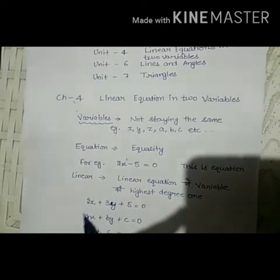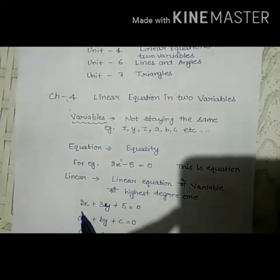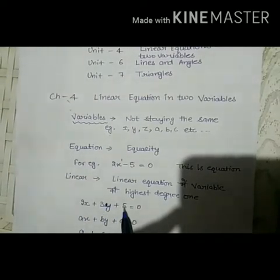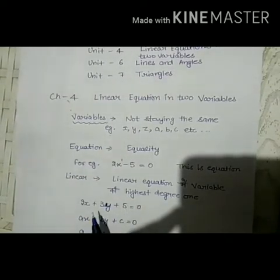Now I have a second example: 2x plus 3y plus 5 is equal to 0. Here, x and y both have the highest degree of 1, so this is also a linear equation in two variables.